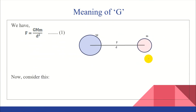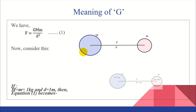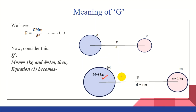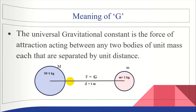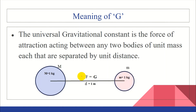The meaning of G: consider that the mass of the first body equals 1 kg, mass of the second body equals 1 kg, and the distance between them equals 1 meter — all unit values. Under this case, F becomes equal to G times 1 times 1 divided by 1 squared, which gives F equals G. This means the universal gravitational constant G is the force of attraction acting between any two bodies of unit mass separated by unit distance, as represented in the diagram.